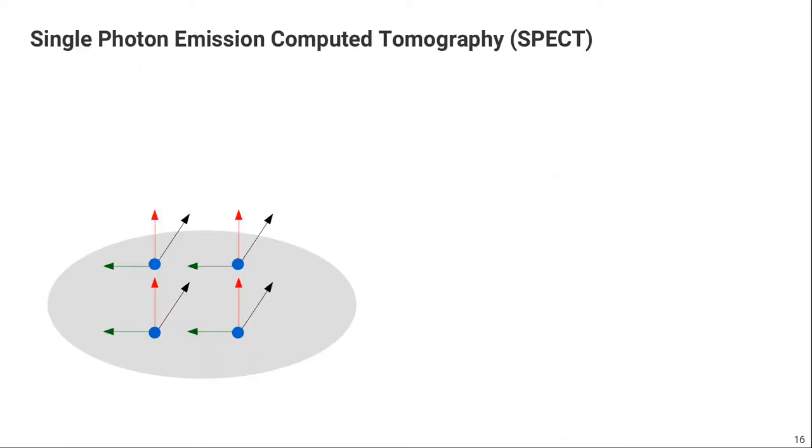So the key to do tomographic image reconstruction is to somehow acquire those projections. How do we acquire those projections in nuclear medicine? As I told you already, there are two main ways of doing that. The first one is called single photon emission computed tomography or SPECT. SPECT uses radioisotopes that emit single gamma rays, so single photons.